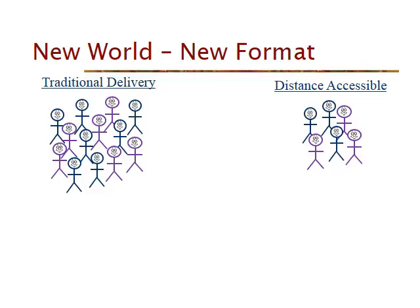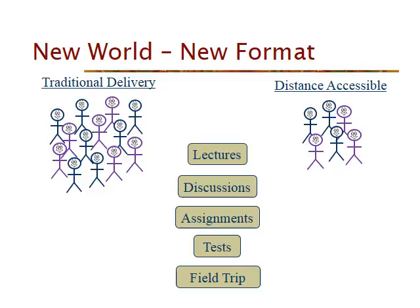There are two sets of students in this class. One set I'll call traditional delivery — they come to class, we have lectures and discussions. And then there is a set of students that are off campus, some carrying on their own jobs and other classes, and they're joining mostly by internet. The two classes are as similar as I can make them — lectures, discussions, assignments, tests, and a field trip where everybody joins together.